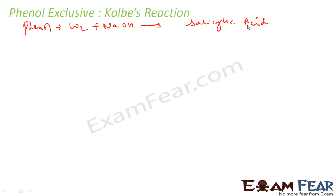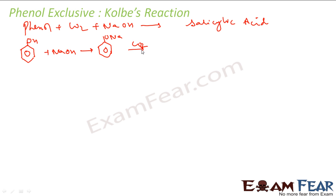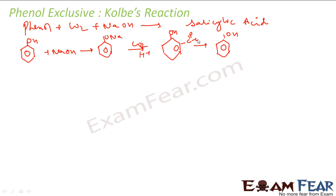So let's see the reaction. I have my phenol, I react with NaOH first and I get O-Na. The O–H bond breaks. Then I react with CO2, and what I get is salicylic acid. I'll give you the reaction mechanism very shortly — you can write OH and COOH on the product.